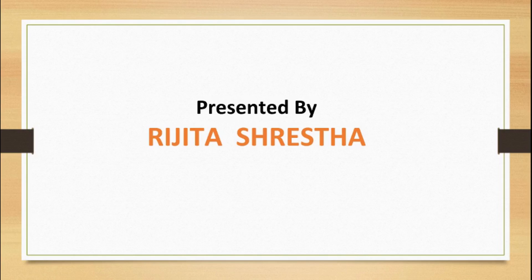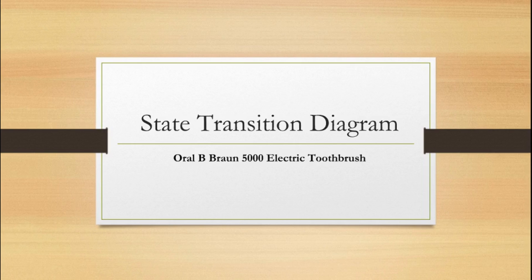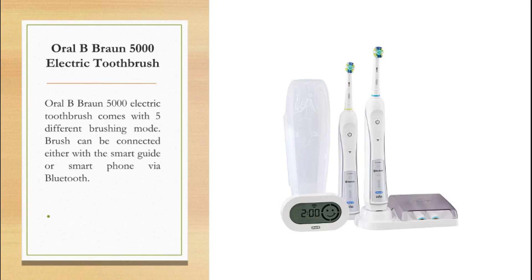Hello everyone, this is Rujita Shrestha. I am here to explain the state transition diagram of Oral-B Braun 5000 electric toothbrush. Let's first glance at the Oral-B Braun 5000 electric toothbrush. It comes with five different brushing modes. The brush can be connected either with smart guide or smartphone via Bluetooth.